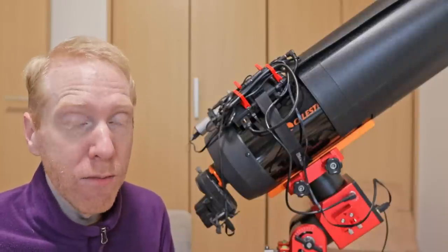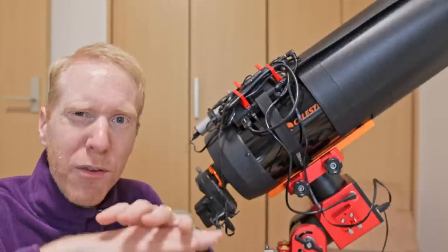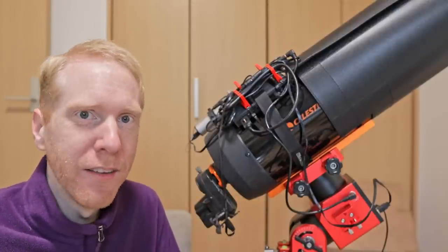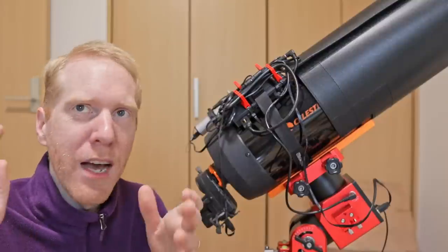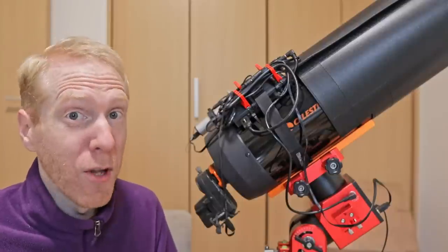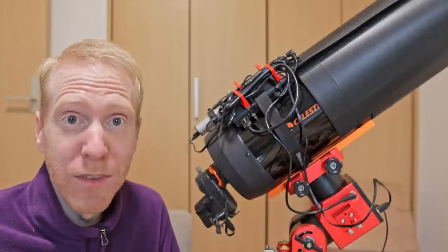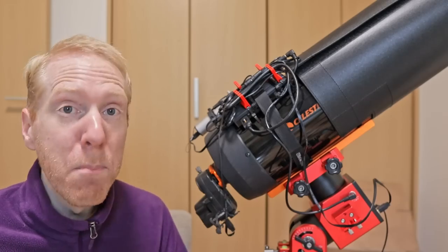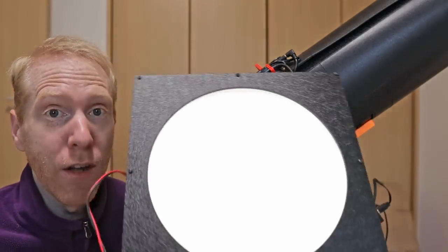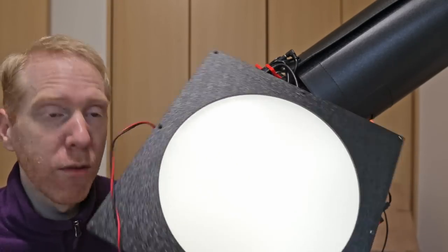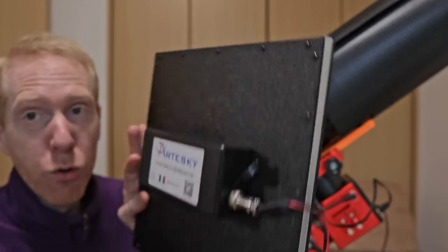There are many techniques to take flat frames, from putting a white t-shirt stretched over your objective lens and then pointing that at a nice uniform sky or at a white wall. I've used those techniques a lot in the past, but sometimes it just doesn't cut it compared to the repeatability that you can get with such a white field generator, which works for this one out of a 12 volt battery.